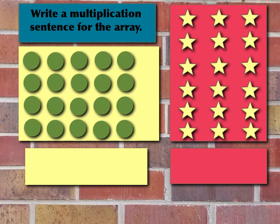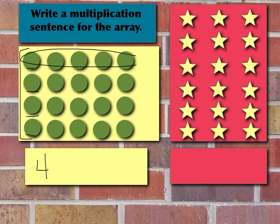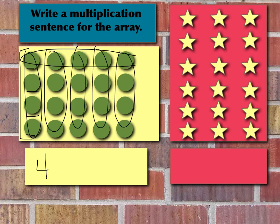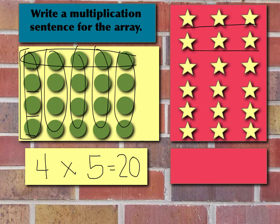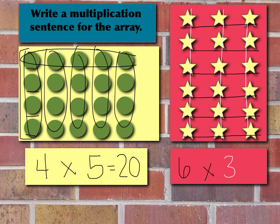Here are two more arrays — write a multiplication sentence for each. Always look at the rows first. In this array, how many rows do we have? One, two, three, four rows. And how many columns? One, two, three, four, five. So we have four rows times five columns, and that equals twenty. Now let's look at the second one. How many rows? One, two, three, four, five, six rows times — let's look at our columns — one, two, three. We only have three columns. So we have six rows times three columns, and that equals eighteen — we can count to confirm: one through eighteen. Six times three equals eighteen.